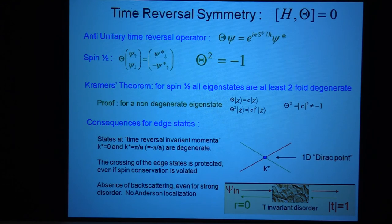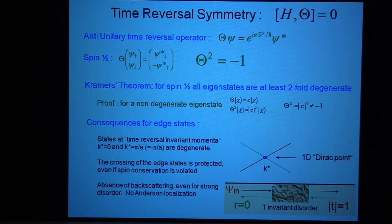The time reversal operator is complex conjugation and then some rotation of the spin. [Student question: What's a Kramers pair?] A Kramers pair is the two degenerate states — a pair of states which are the time reversals of each other.